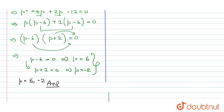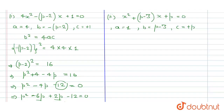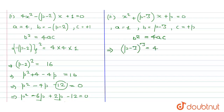Let's proceed in the same manner for Part 2. Applying b squared equals 4ac: b is (p minus 3), so we write (p minus 3) squared equals 4 times 1 times p. Expanding using the (a minus b) squared formula: p squared plus 9 minus 6p equals 4p.